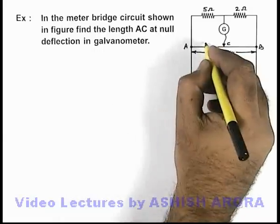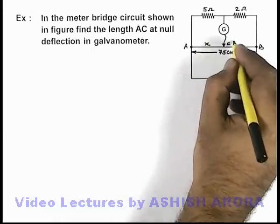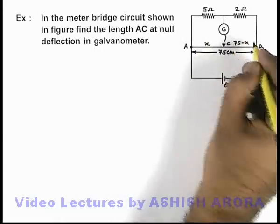Now in this situation, say the length AC is x. The remaining length will be 75 minus x in centimeters.